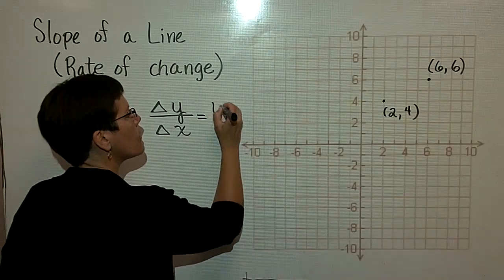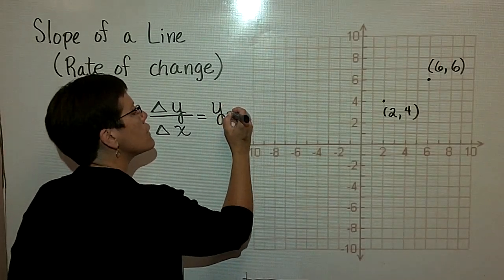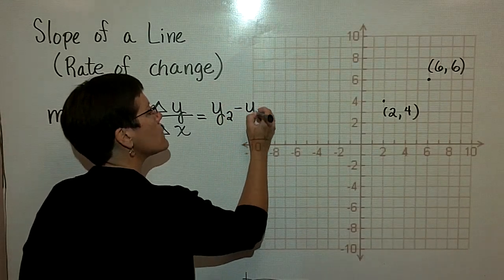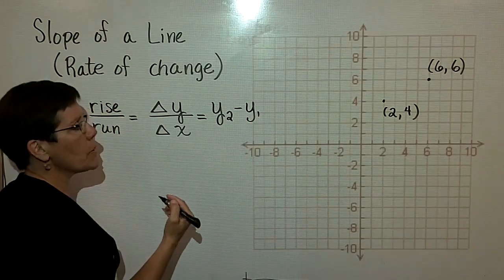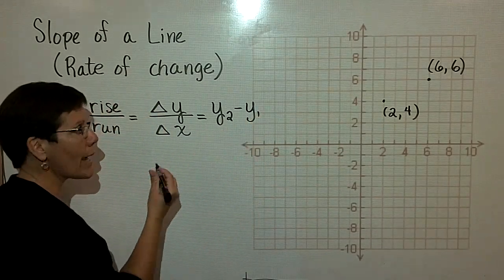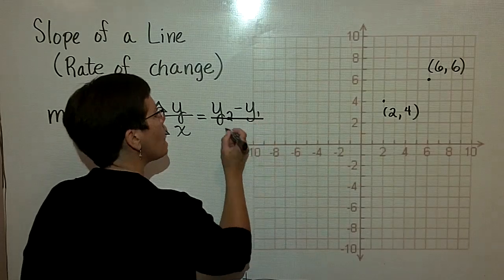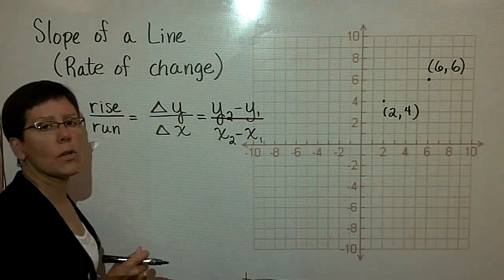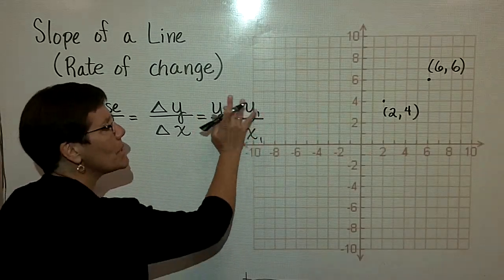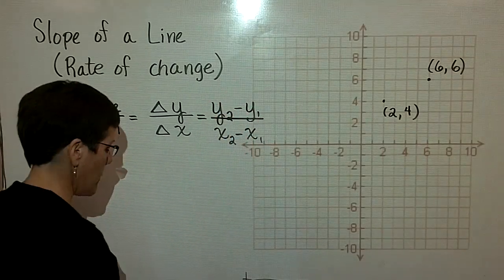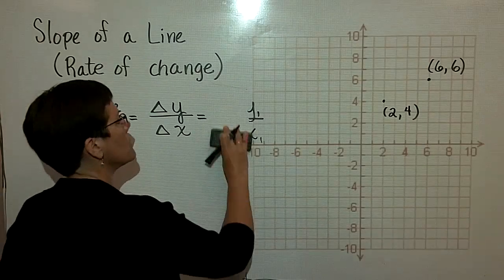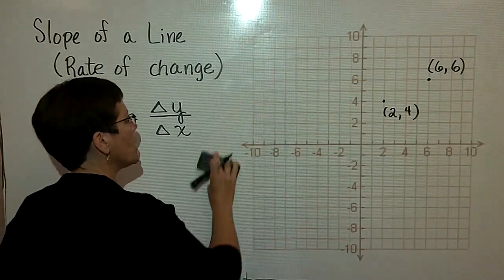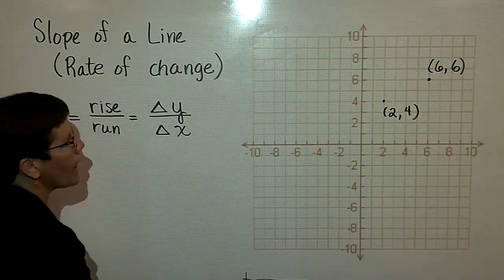Finally, another way we represent the slope of a line is by saying take Y sub 2 minus Y sub 1. So that's in two ordered pairs, take their Y values and subtract them, and then divide by X sub 2 minus X sub 1. We'll focus on that in a minute. For this problem, let's just talk about rise over run or the change in Y over the change in X.